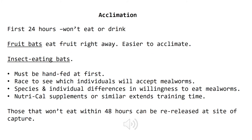Acclimation is a big challenge with wild-caught bats, particularly during the first two days. Fruit bats eat fruit right away and are generally easier to acclimate. But insect-eating bats are really challenging — there are large species-specific and individual differences in their willingness to eat mealworms, which is the main food available. There's a race during the first 24 to 48 hours to figure out which individuals will accept mealworms. After 48 hours they're going to start to get weak, so your choice is to either euthanize those animals or release them — ideally back to the site where they were captured.